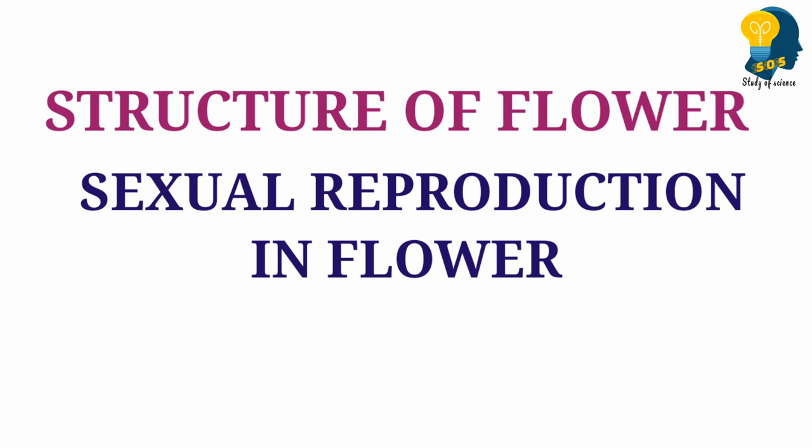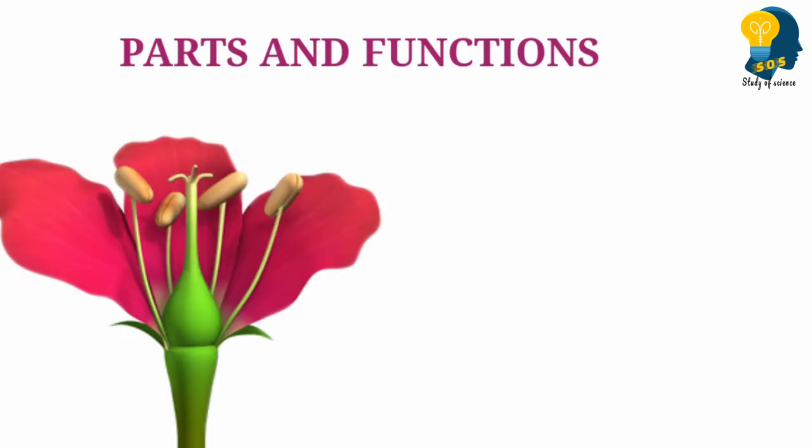First, you should know the parts of the flower. When you know the parts, it is easy to understand how reproduction is taking place. When I am explaining, you can easily understand. So, let's begin to know which are the parts of the flower.